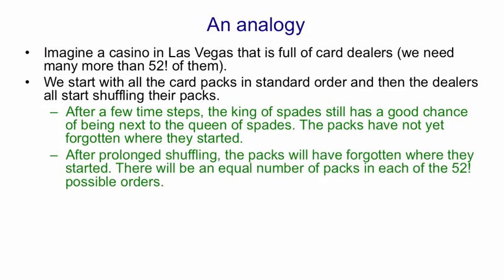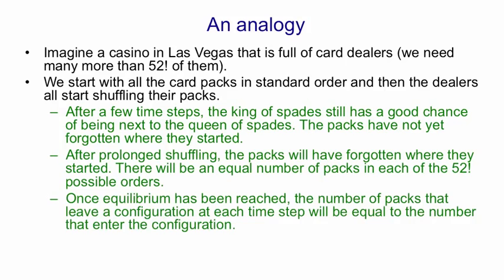If we keep shuffling, eventually the initial order will be irrelevant. The packs will have forgotten where they started, and in fact there will be an equal number of packs in each of the 52 factorial possible orders. Once this has happened, if we carry on shuffling there'll still be an equal number of packs in each of the 52 factorial orders. That's why it's called equilibrium, because the fraction in any one configuration doesn't change.